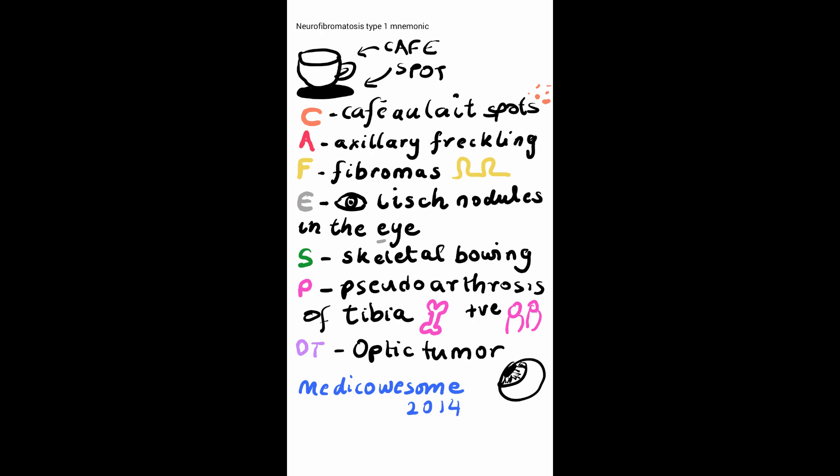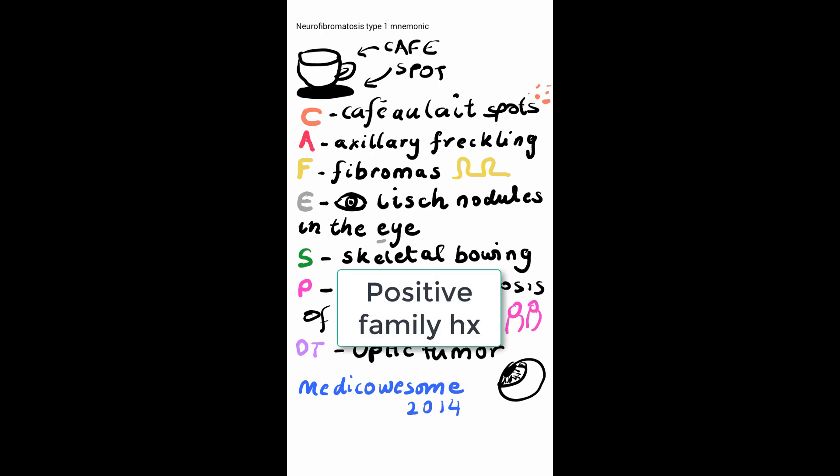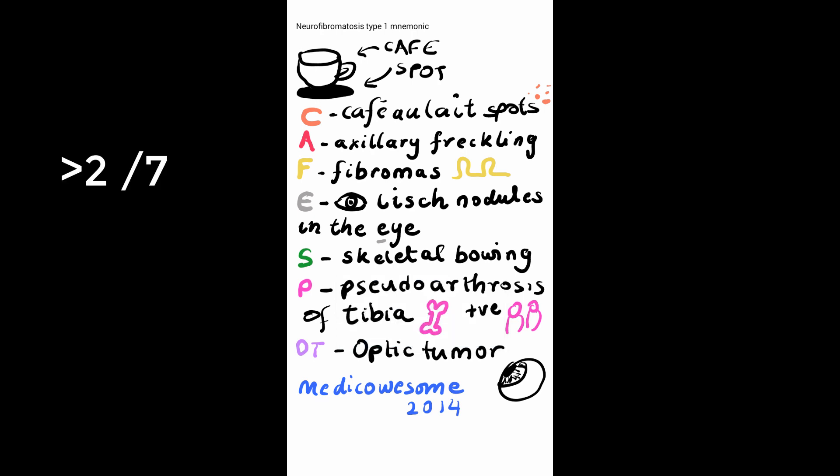The mnemonic is CAFE SPOT. The only thing I would change is P, which would stand for a positive family history. You just have to remember that it's two out of the seven criteria to have a positive diagnosis.